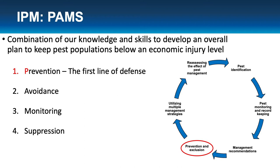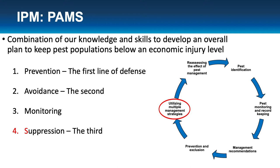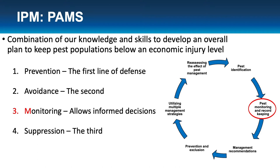Monitoring — I know it's out of order, but the acronym wouldn't look so nice if M was at the end — allows those informed decisions. It's extremely important to go out and scout your field to see what the cause of a symptom in your crop is. Prevention is your first line of defense: it's basically the practice of keeping that pest population from even getting into your field, stopping it entirely from showing up.